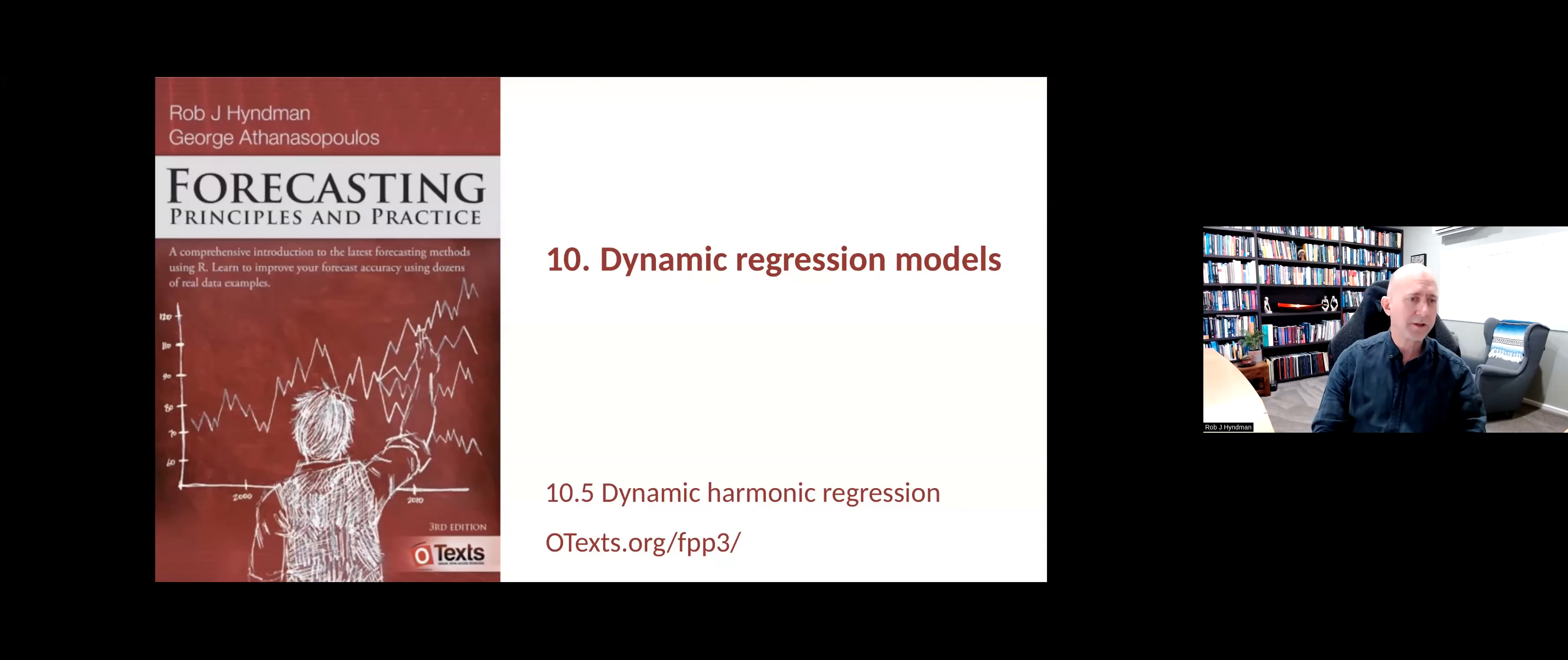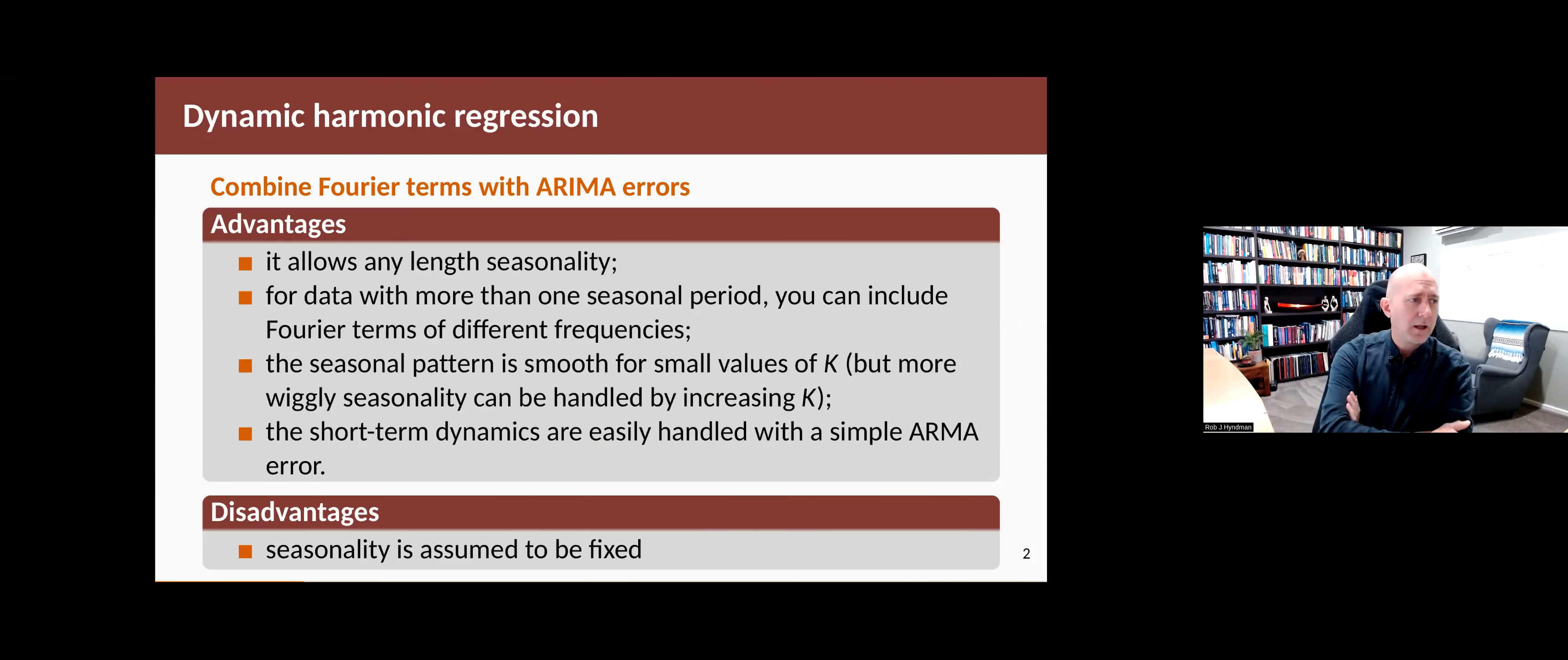Using Fourier terms in a dynamic regression model is a really useful way for dealing with some types of seasonality. For example, you can deal with any length seasonality, including hourly data with length 24 or even hourly data with an annual seasonality with a very long period.